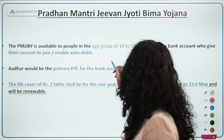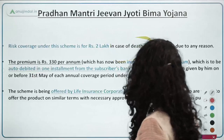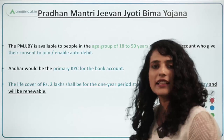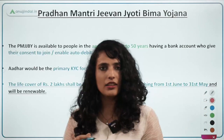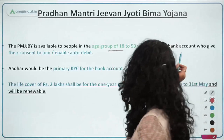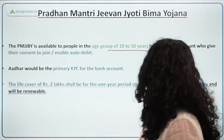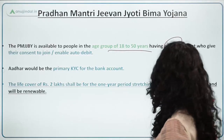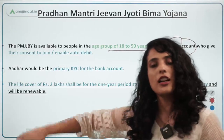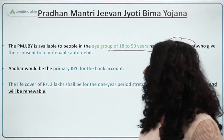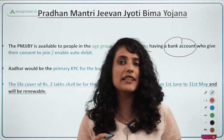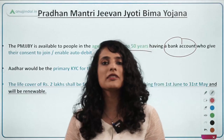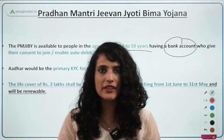Pradhan Mantri Jeevan Jyoti Bima Yojana — the age group is 18 to 50 years (it was earlier 18 to 40 years). Those who have a bank account in this age group are eligible to avail this insurance scheme. It is an auto-debit scheme. As we covered in yesterday's current affairs, the annual subscription rate has been increased from rupees 330 to rupees 436.